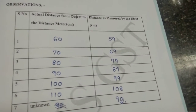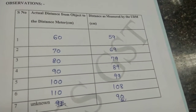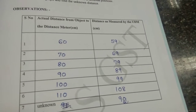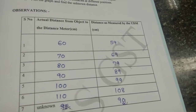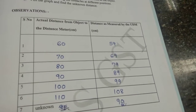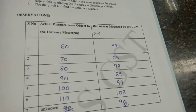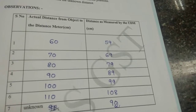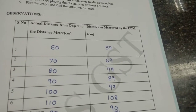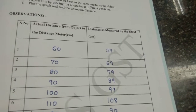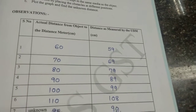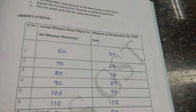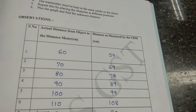The actual distance from the object to the distance meter is the distance we keep from the screen to the ultrasonic distance meter, and the right side indicates the distance as measured by the UDM. These 6 values are going to help us find the unknown distance.